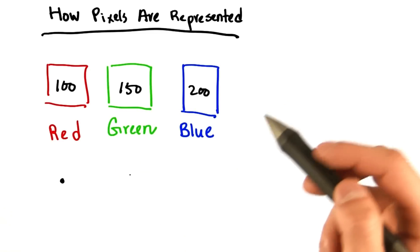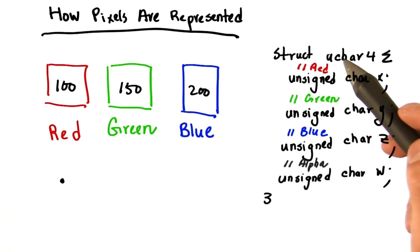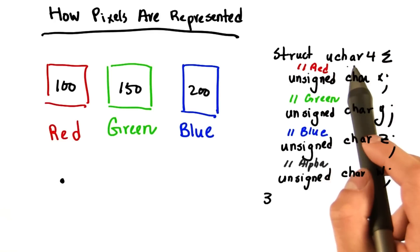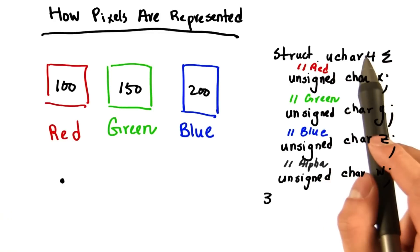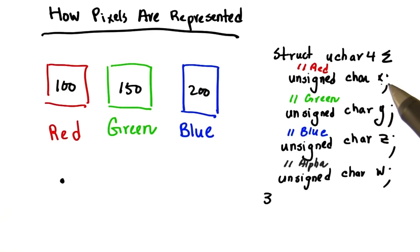So how are pixels represented in CUDA? In CUDA code, each pixel is represented as an unsigned char4 struct. This structure has four unsigned char components named X, Y, Z, and W. X is your red channel, Y is your green channel, Z is your blue channel, and W is your alpha channel. The fourth component is reserved for the alpha channel which carries transparency information. We will ignore this component throughout our homework as it does not pertain to transforming the image from color to grayscale.